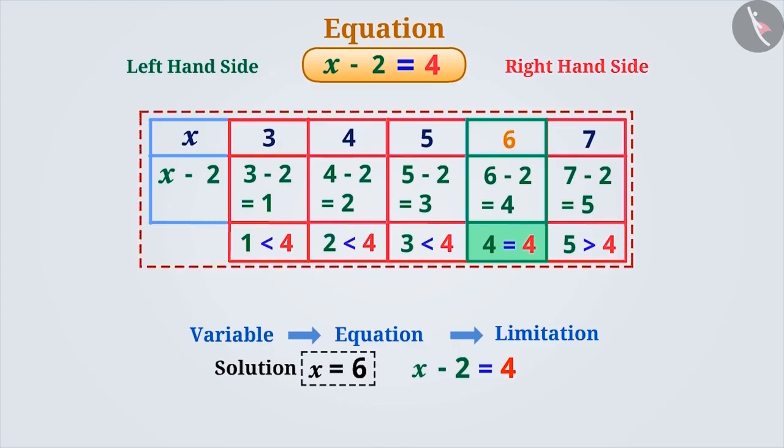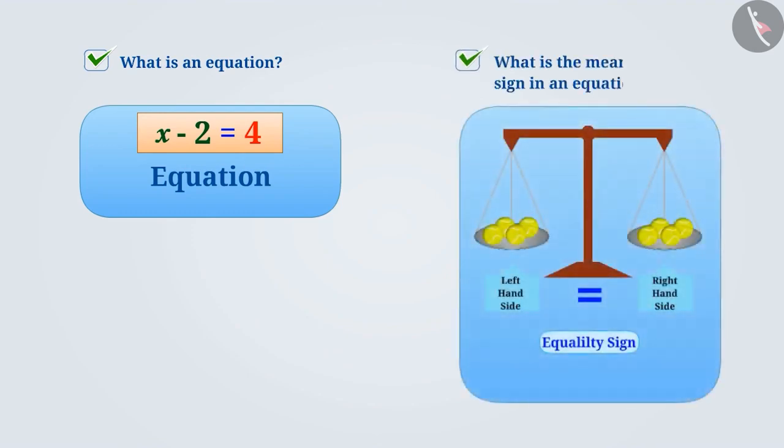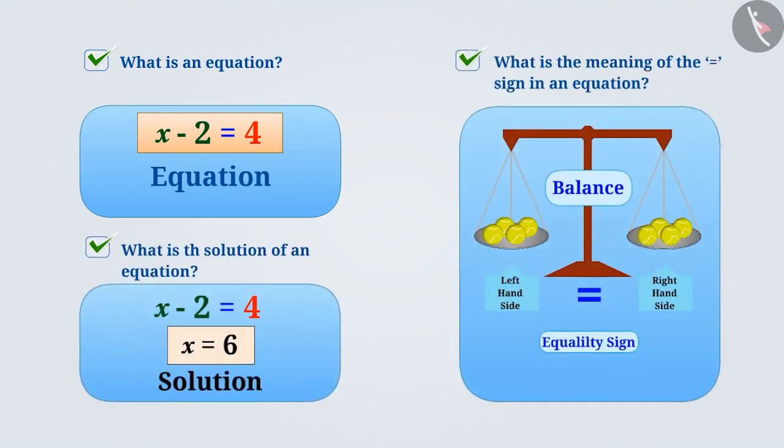The method of finding out whether the equation is satisfied by giving the variable a value is called the trial-and-error method. There are many methods that we will learn in the next classes. With this, you must have understood what is an equation, what is the meaning of the equal to sign in an equation, and what is the solution of an equation.